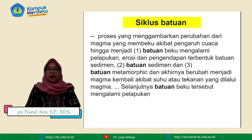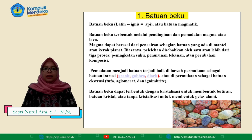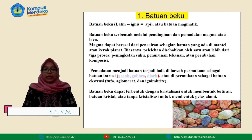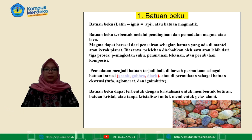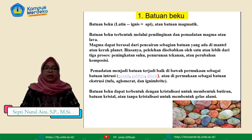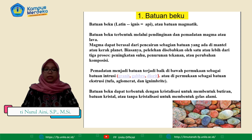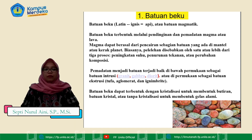Batuan beku tersebut akan mengalami pelapukan. Batuan beku berasal dari bahasa latin yang artinya iknis atau api, atau batuan magmatik. Batuan beku ini terbentuk melalui pendinginan atau pemadatan magma atau lava. Magma dapat berasal dari pencairan sebagian batuan yang ada di mantel atau kerak bumi. Biasanya pelelehan disebabkan oleh peningkatan suhu, penurunan tekanan, atau perubahan komposisi. Pemadatan menjadi batuan terjadi baik di bawah permukaan sebagai batuan intrusi yaitu granit, gabroh, dan diorit, atau di permukaan sebagai batuan ekstrusi yaitu tufa, aklomerat, dan ignimbrite.